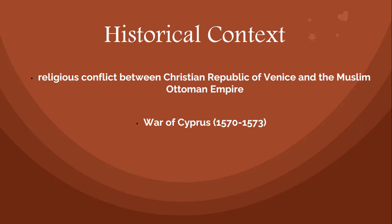Moving on to the historical context of the play: there was an ongoing religious conflict between the Christian Republic of Venice and the Muslim Ottoman Empire, and Shakespeare sets his play against this backdrop. This conflict had been ongoing from the 15th century, and by the time the play premiered at the beginning of the 17th century, there had already been four Ottoman-Venetian wars. The most recent one occurred between 1570 and 1573 and was known as the War of Cyprus.